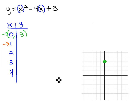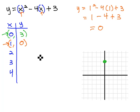Our second point we wanted to plug in was 1. So we're going to replace each x with 1. y equals 1 squared minus 4 times 1 plus 3. Well, 1 squared is 1, 4 times 1 is 4, plus 3. 1 minus 4 plus 3 is 0. So when x is 1, y is 0. Let's plot 1 comma 0, which is 1 to the right.